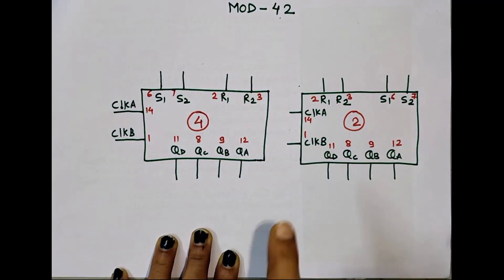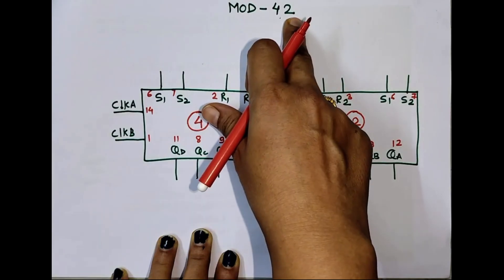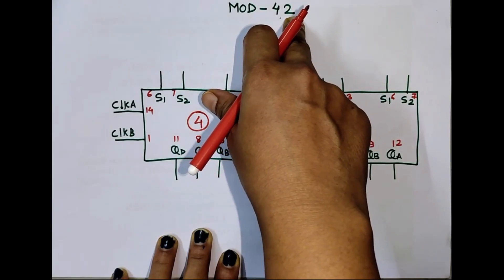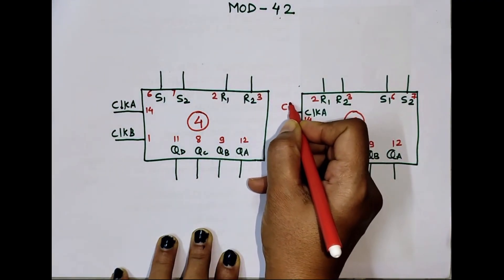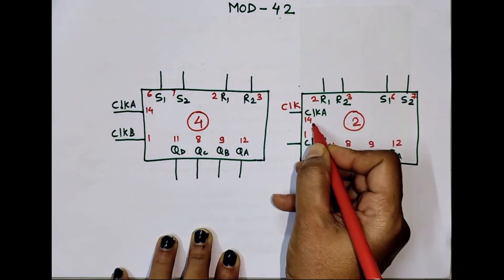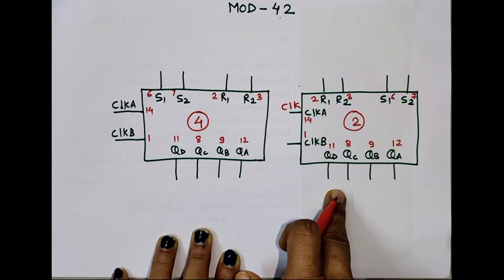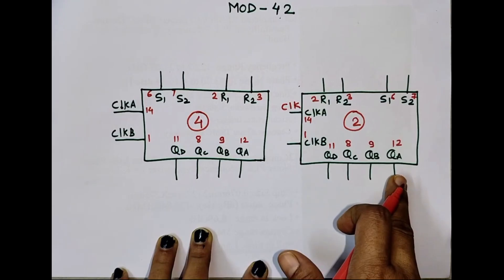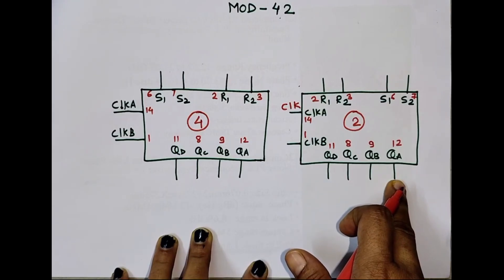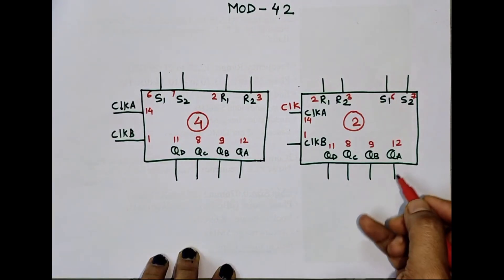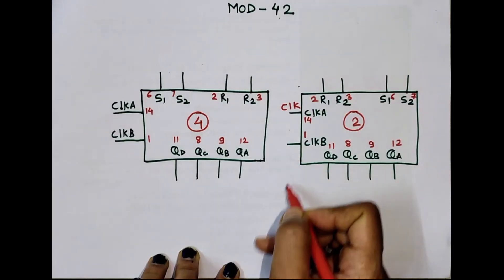So I need one IC to display LSB and another IC to display MSB. So I'll use this for LSB, for 2, and this for MSB, for 4. So the IC which we will use to display least significant bit will receive external clock. So I'll connect external clock here, pin number 14 of my first IC. Then this is ripple counter, it means output of first flip-flop will act as clock input or will be connected to clock input of second flip-flop. So I'll connect QA to Clock B.